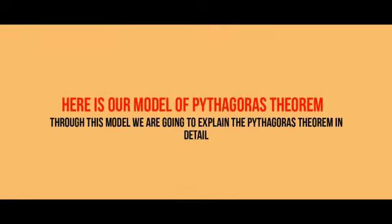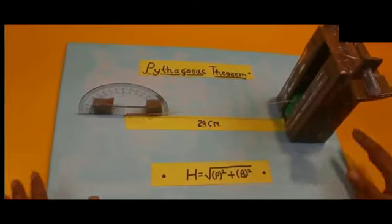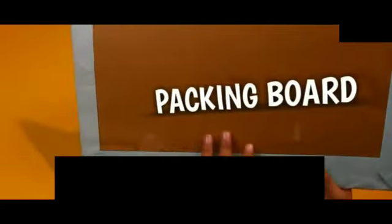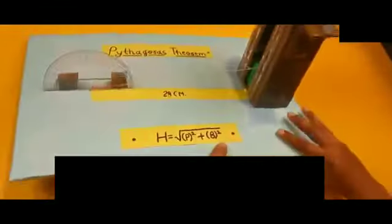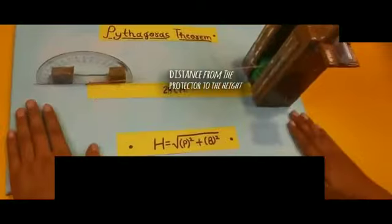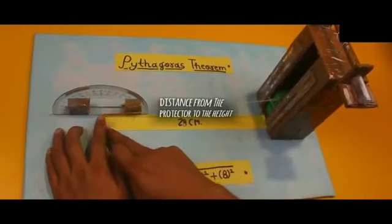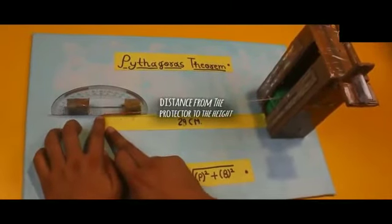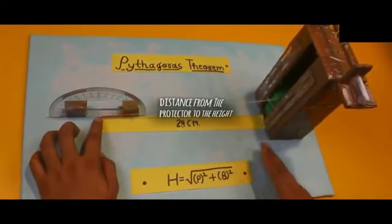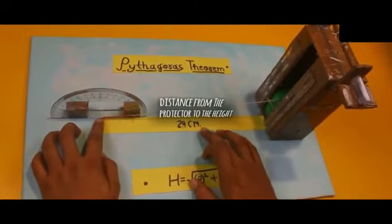Here is our model of Pythagoras theorem. Here we are going to explain the theorem in detail. This is the model and this is the base which is simply made up of packing board. Let us take the distance from the protractor to the height be 28 cm respectively.